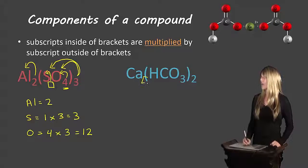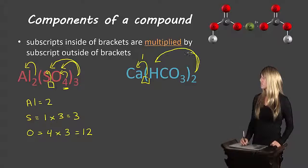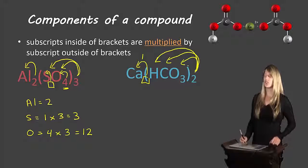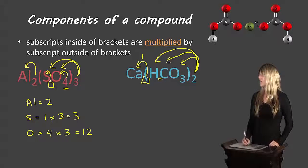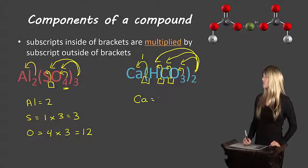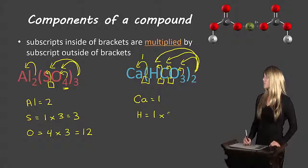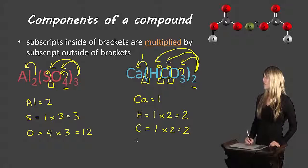Let's look at another example: Ca(HCO3)2. Calcium has no subscript, so there is one calcium. The two outside the brackets applies to everything inside — hydrogen, carbon, and oxygen. Hydrogen has no subscript inside, so one times two equals two hydrogens. Carbon has no subscript inside, so one times two equals two carbons. Oxygen has a subscript of three inside, so three times two equals six oxygens. In total: calcium one, hydrogen two, carbon two, oxygen six.